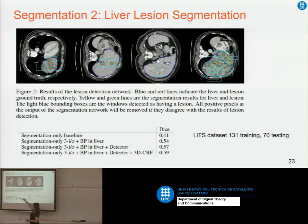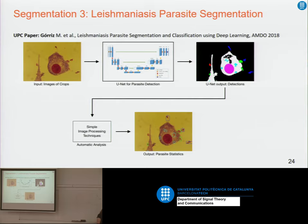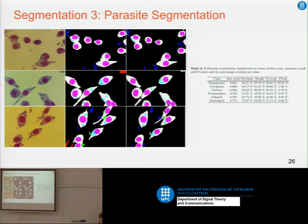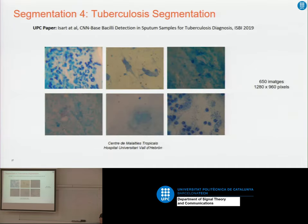Three variants were tested: using segmentation only, using the detector of bad versus good tissue, and using post-processing with conditional random fields. In another example using microscope images, the goal was to detect parasites and determine whether they were inside or outside cells. This was also solved using a UNet. We have also used the UNet to detect bacilli of tuberculosis in sputum samples and are still working on that problem.